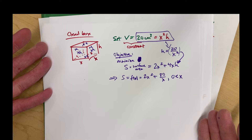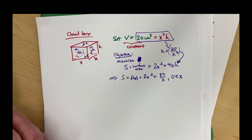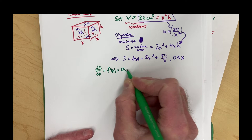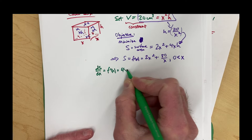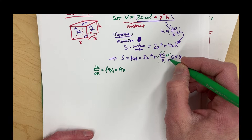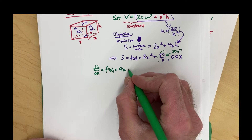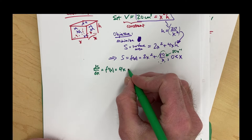We're going to take the derivative, set it equal to zero, solve for x, and — maybe based on a graph or some sort of test — confirm it's a minimum. Now find the derivative: ds/dx, or f prime of x. The derivative of 2x squared is 4x. To avoid the quotient rule, write 80 over x as 80 times x to the negative one. Differentiating gives 4x minus 80 over x squared.